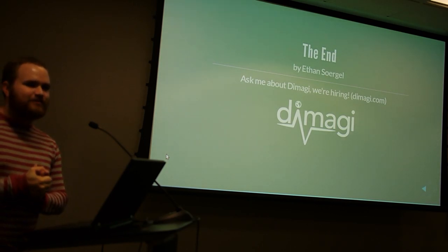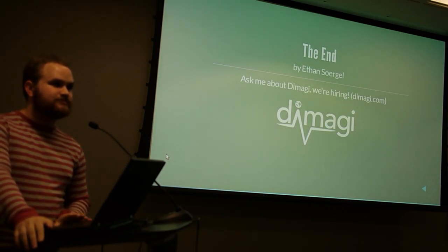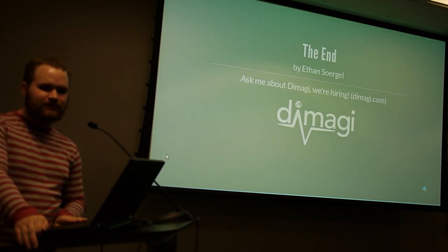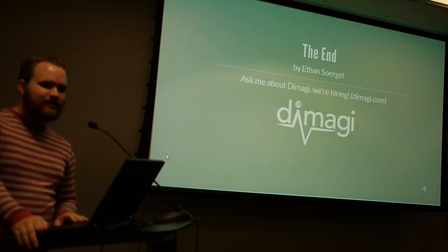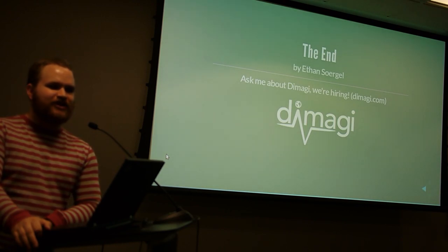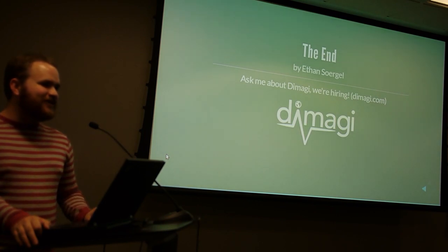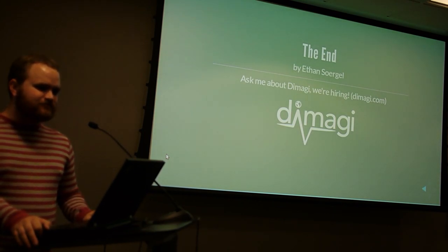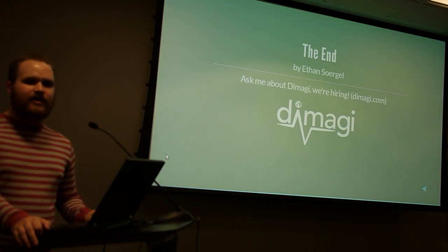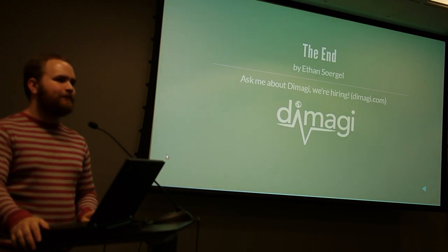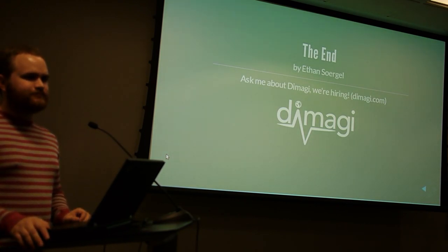Do you know what the future of class-based views in Django upstream is? I don't. There's a lot of publicity lately because one of the Django core developers said class-based views are a mistake. They're definitely pretty controversial, but I think they're going to stay. What instances would you go straight to a functional view yourself when you're coding?